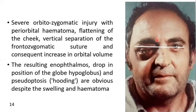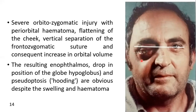Here you can see a severe zygomatic orbital injury with periorbital hematoma, flattening of the cheek, and a vertical separation of the frontozygomatic suture. There is an increase in orbital volume; due to this increase, enophthalmos occurs — the eyeball moves inward and downward. Here you can see a hypoglobus — a drop in the position of the globe — and pseudoptosis. This phenomenon will also be described in relation to the Lockwood suspensory ligament and the lateral detachment or downward movement of the outer canthus of the eye, to be discussed in another video.